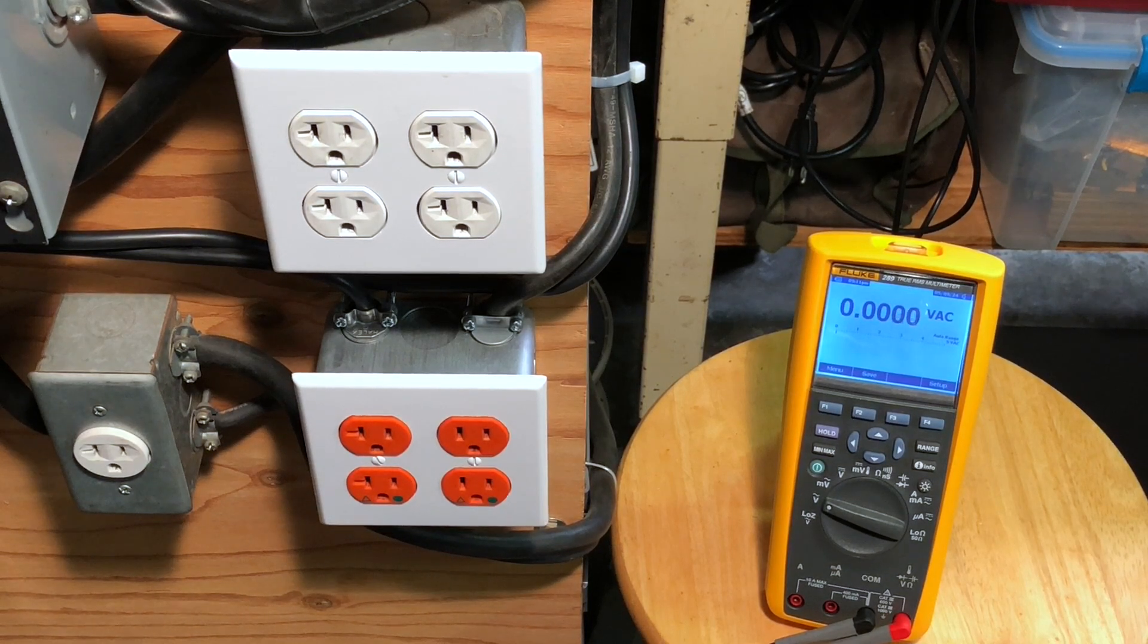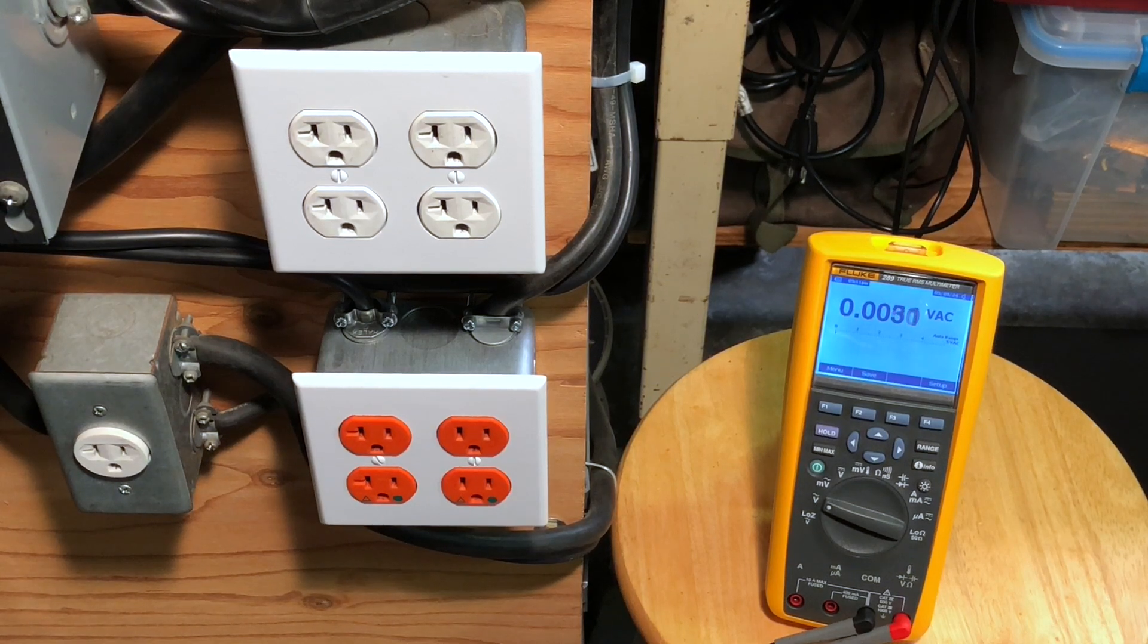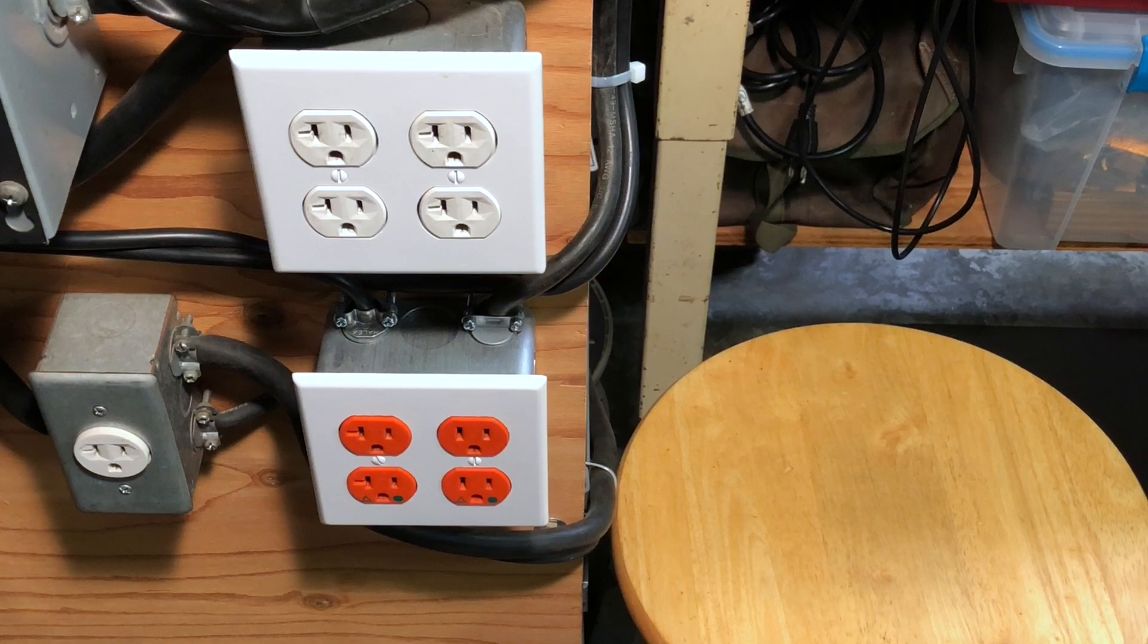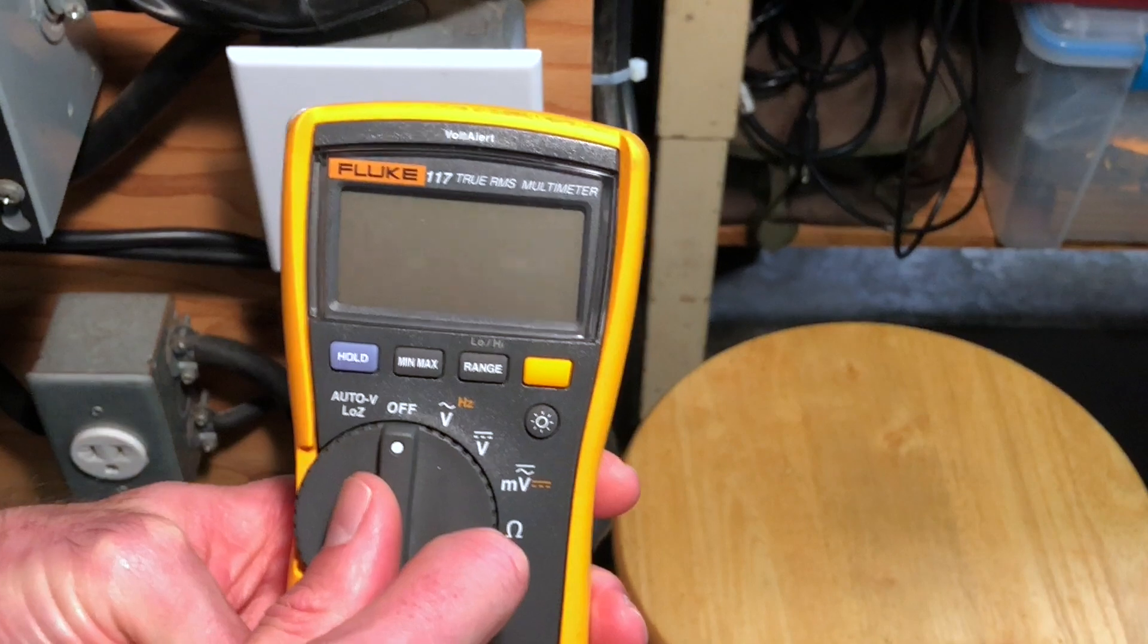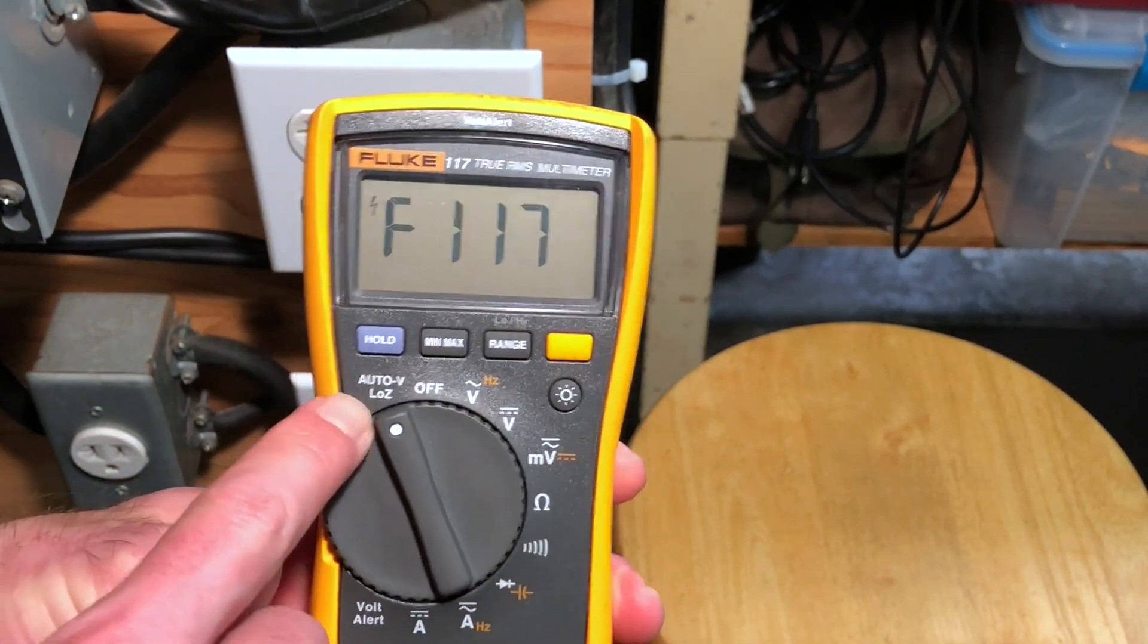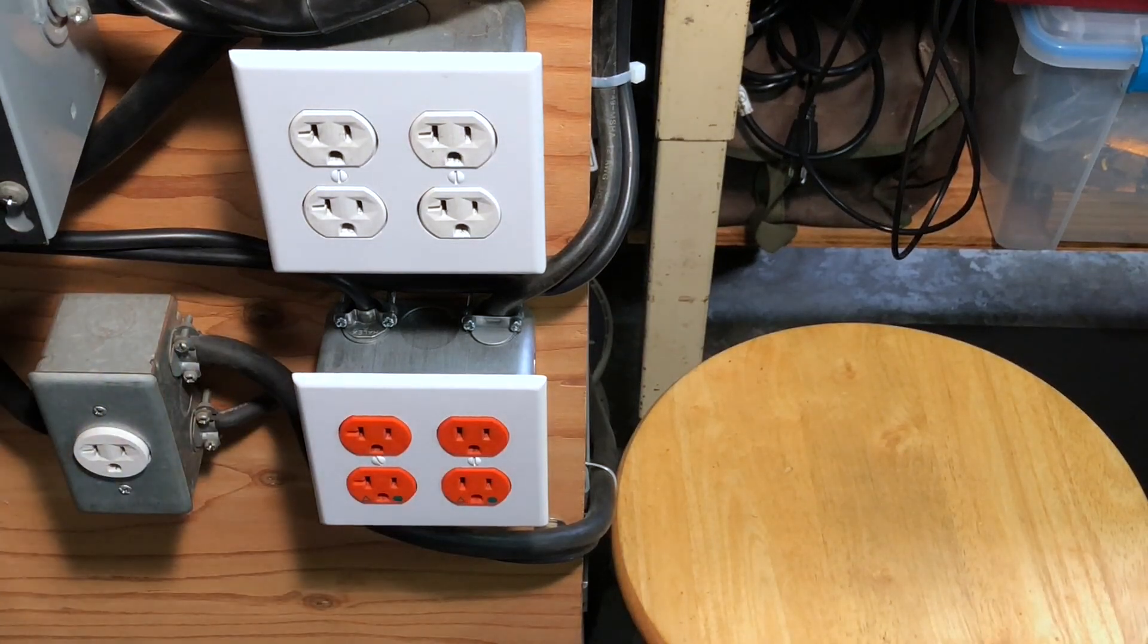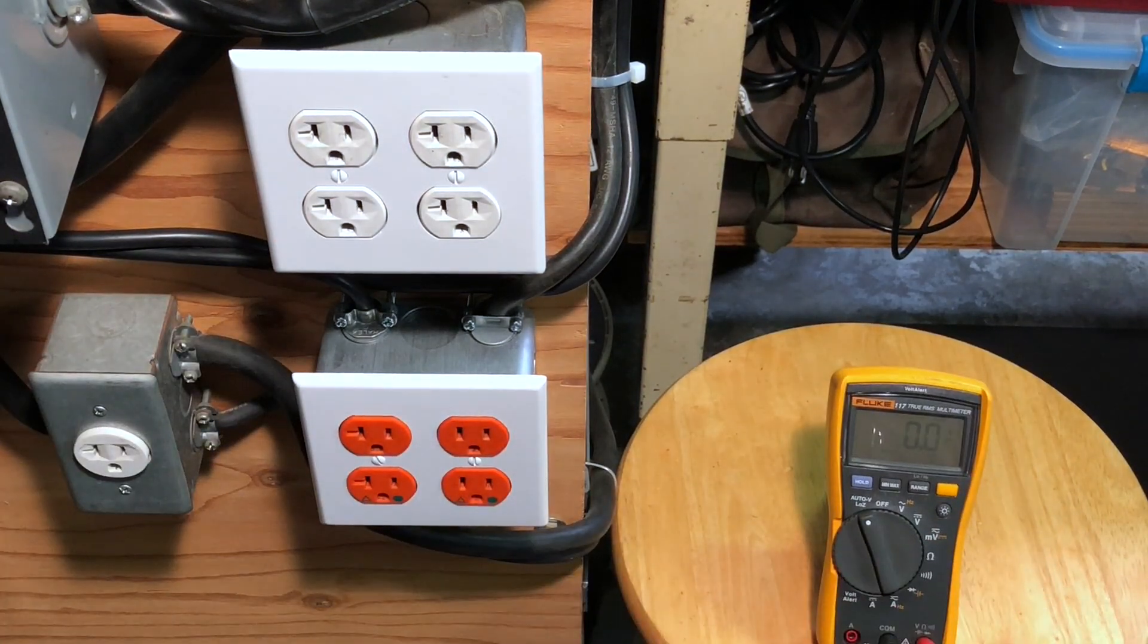When you're taking a reading for a ghost voltage and you get the readings like you just saw, you really should verify that with a second multimeter, just to verify there was no issue going on with the meter that you used and that the results were in fact accurate. Let me grab my other digital multimeter here.